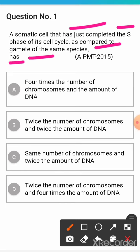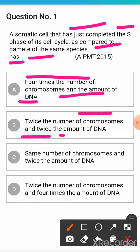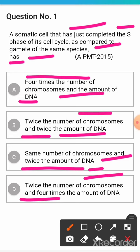Option A: 4 times the number of chromosomes and the amount of DNA. Option B: twice the number of chromosomes and twice the amount of DNA. Option C: same number of chromosomes and twice the amount of DNA. Option D: twice the number of chromosomes and 4 times the amount of DNA.